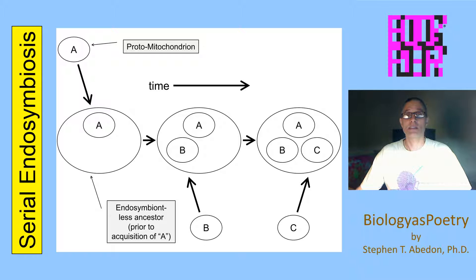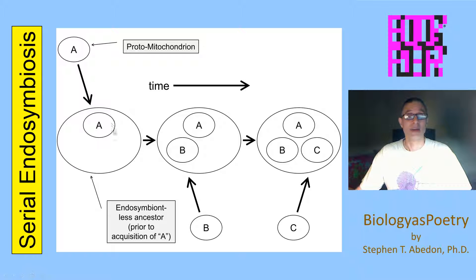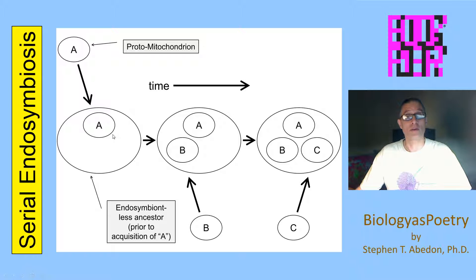Shown here is the concept of serial endosymbiosis. We start with a cell that is lacking an endosymbiont — minus this A individual here. Then we have acquisition of a cell within the original cell, and that is our initial endosymbiont. This, for example, could be a mitochondrion.